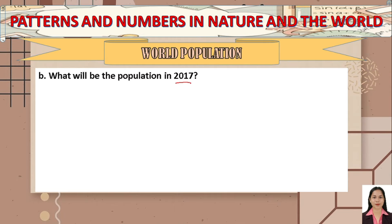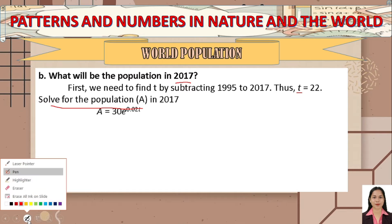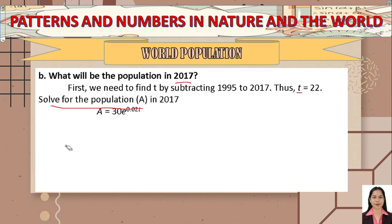For the second question — the population in 2017 — we first subtract 1995 from 2017 to find the time period. 2017 − 1995 = 22, so t = 22. Now let's solve for A in 2017 using the same exponential growth model.